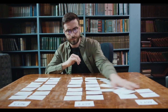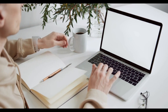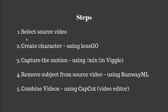Now you might be wondering — it's nowhere close to what we see in animated movies. Well, we aren't done yet. We are actually going to take a source video and replace the person in it with one of our own characters, retaining the background. We will achieve this in five simple steps: Step 1 is to select a source video. Then create a character using a tool called Lensgo. Then capture the motion using the mix command. Then remove the subject from the source video to get the background using a tool called RunwayML. Then combine the videos using an editor called CapCut.